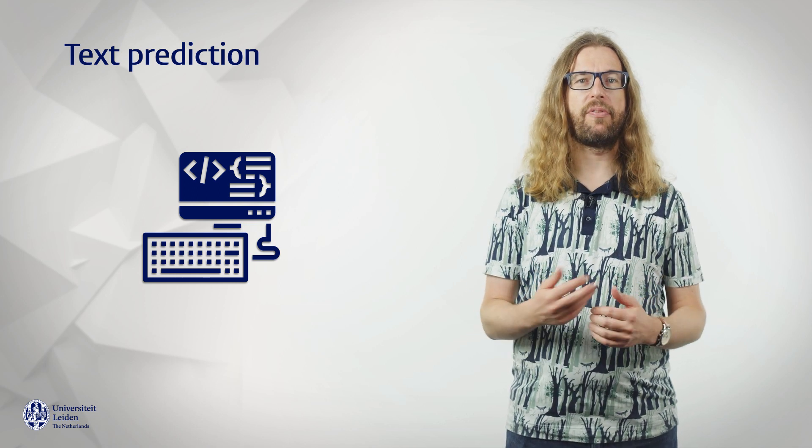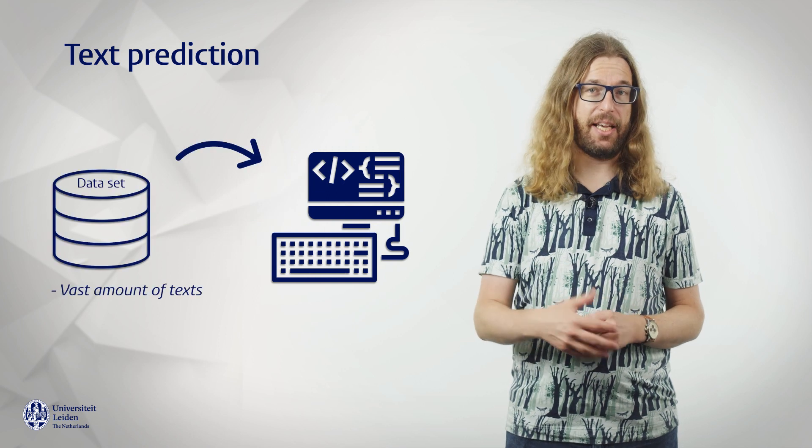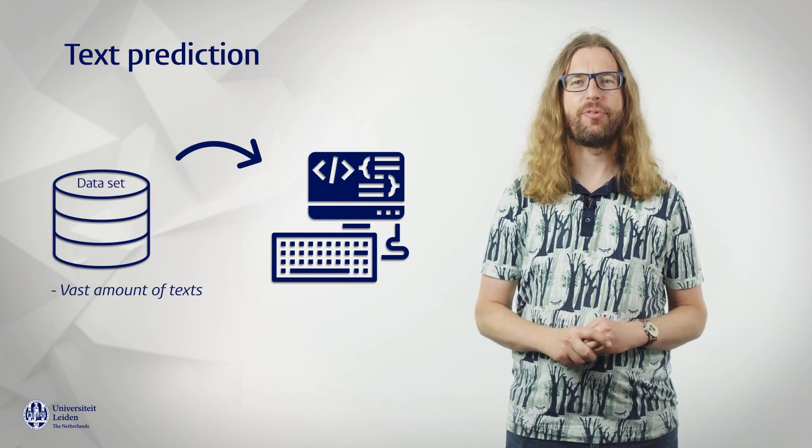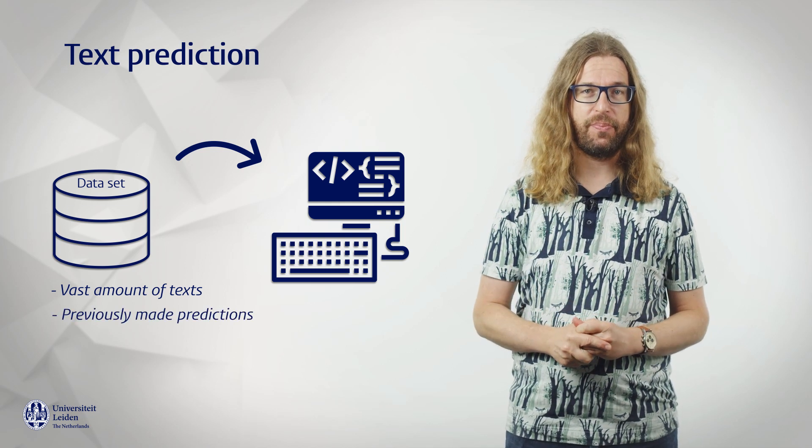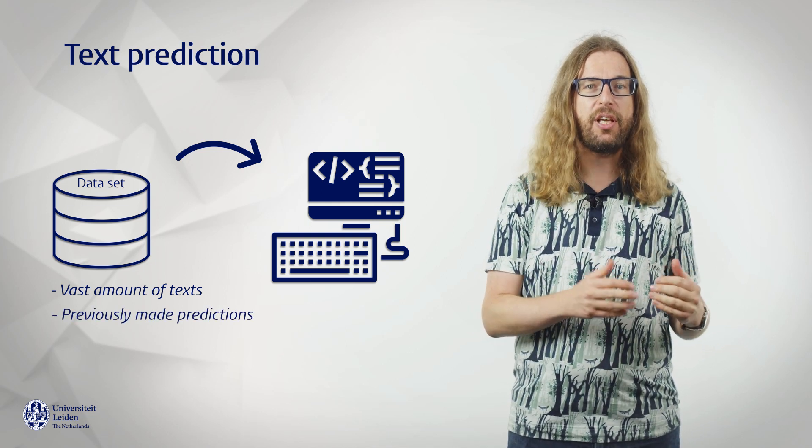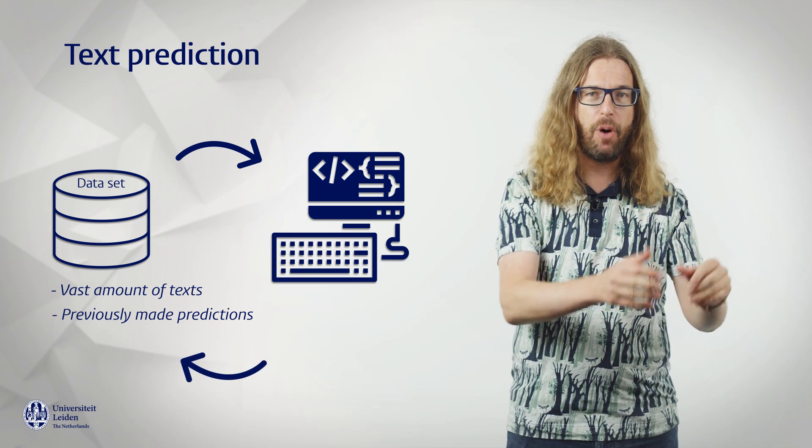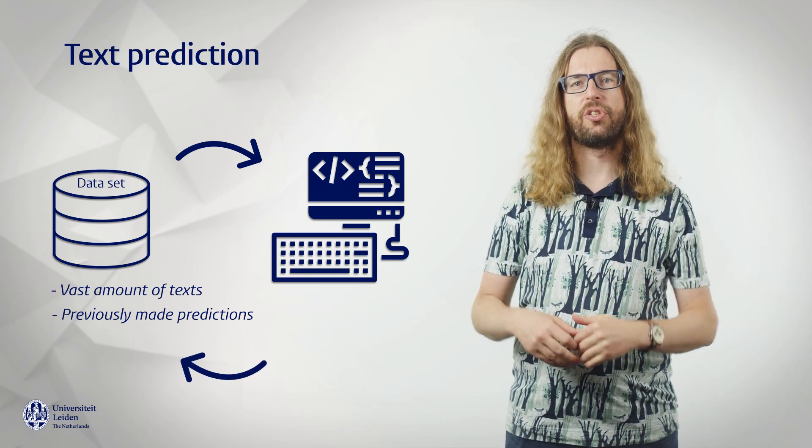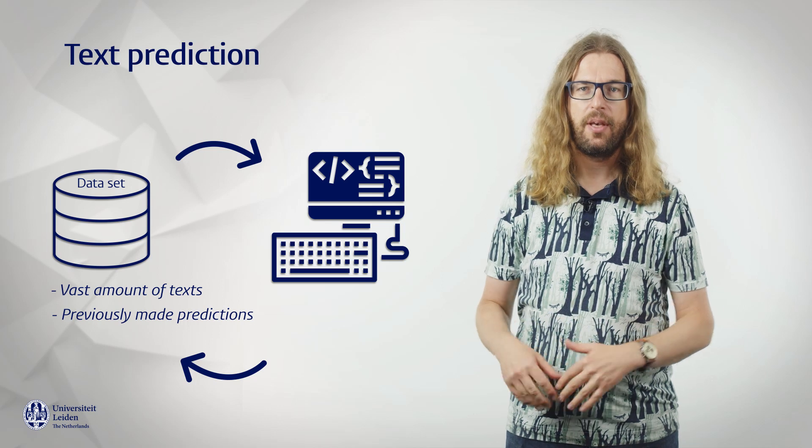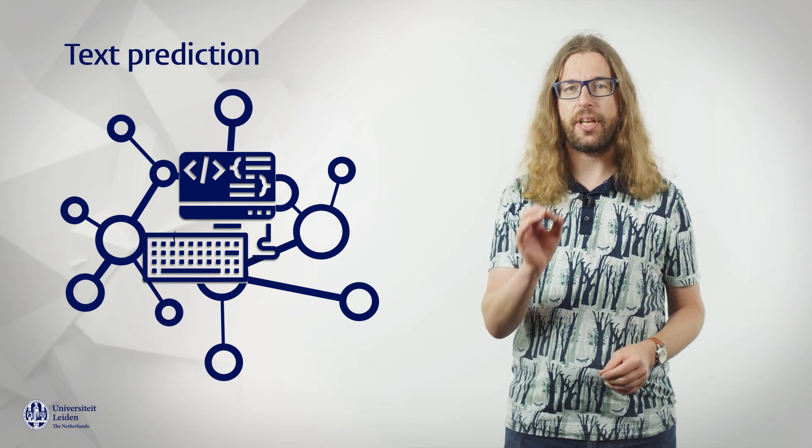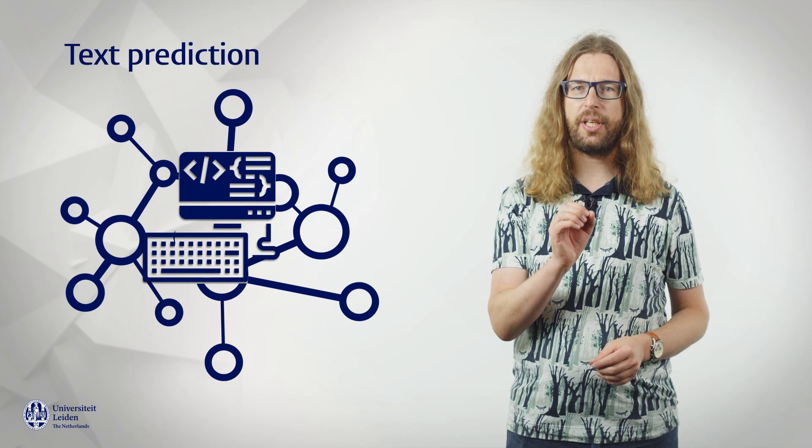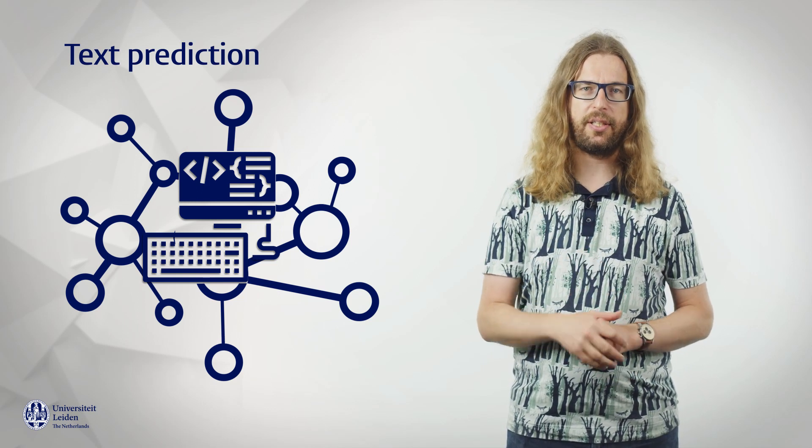This training involves giving the model many, many texts, usually stolen, I mean copied, from the internet, and having it make billions of predictions. Correct predictions reinforce certain pathways in the model, while incorrect predictions weaken those pathways. And the end result is an extremely complex black box model that is quite good at predicting the next word in a text.